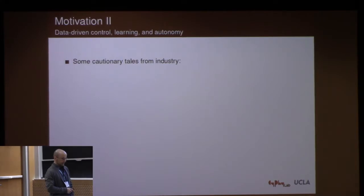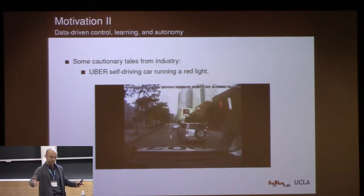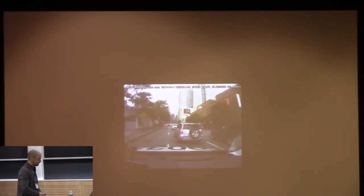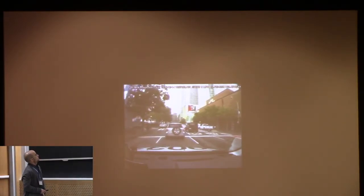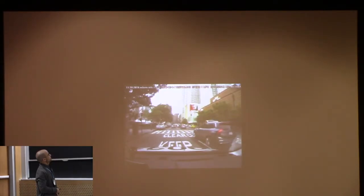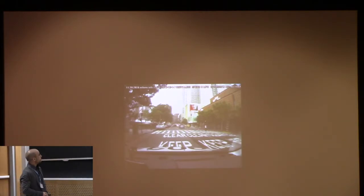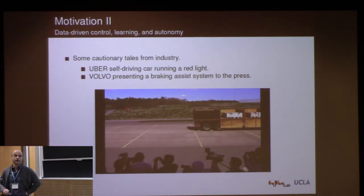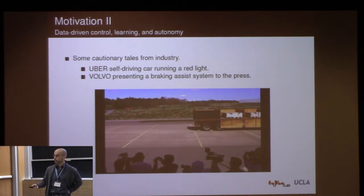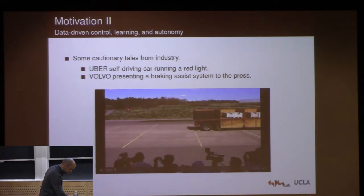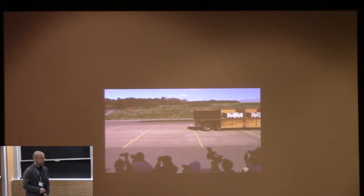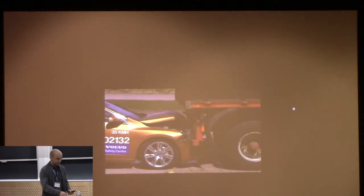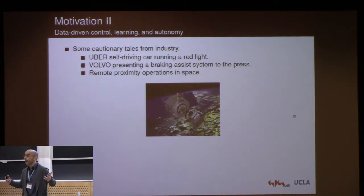I'm sure all of you have seen examples of where things go wrong. Here's an example of an Uber car that decides to run a red light — the light turns red, everybody stops, a person starts to cross, and the Uber just thought it was not a red light. Here's an example from Volvo, showing their safety features to journalists — the car is supposed to find obstacles and automatically brake. Sometimes it doesn't work. These are examples from industry and we can see the videos, but we don't really understand the reasons why.